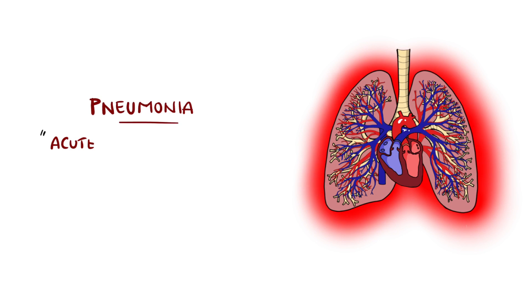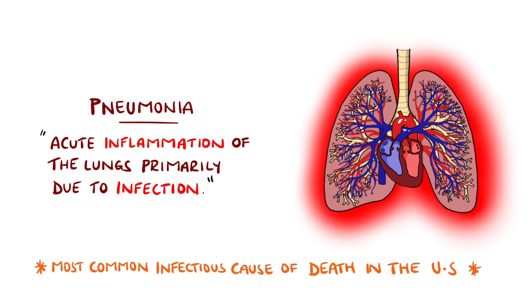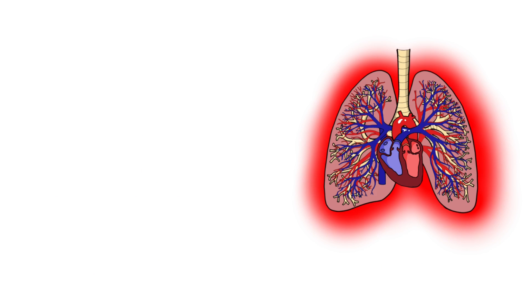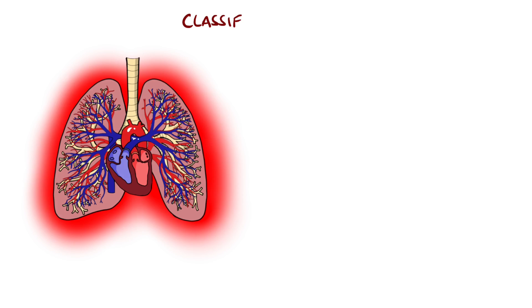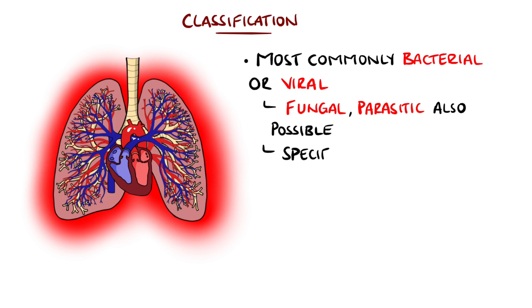Pneumonia is an acute inflammation of the lungs, mostly as a result of infection, and it is the most common cause of infectious disease death in the United States. The underlying infection causing pneumonia can be extremely variable — for example, bacteria and viruses are the most common, but also fungi and even parasites are possible.